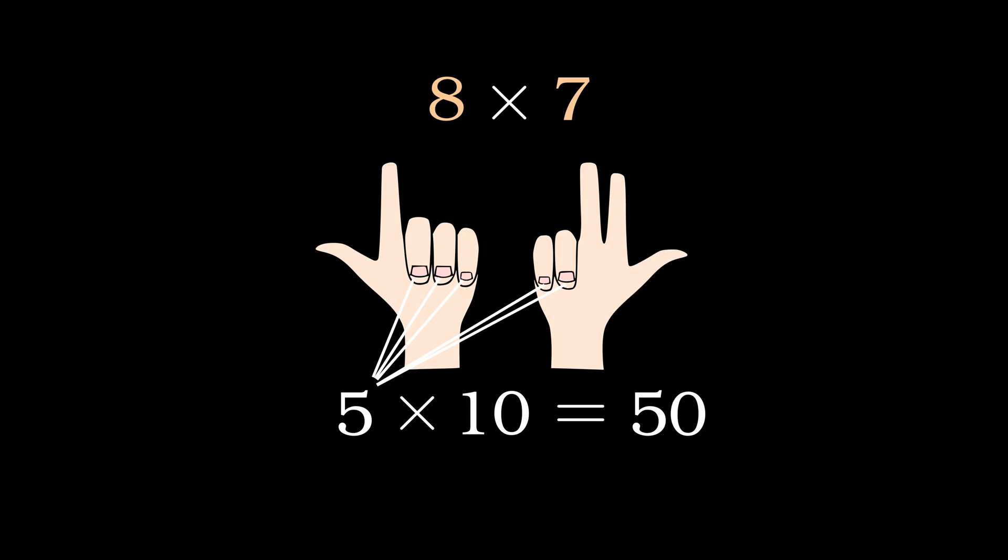But also, we have 2 fingers sticking up on one hand and 3 fingers on the other, so 2 times 3 equals 6. By adding these two numbers, we get what 8 times 7 is equal to, and that is 56.